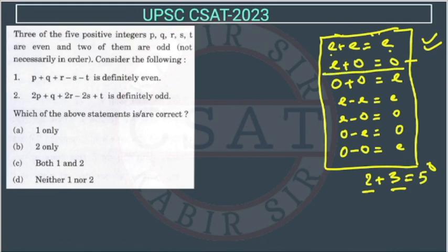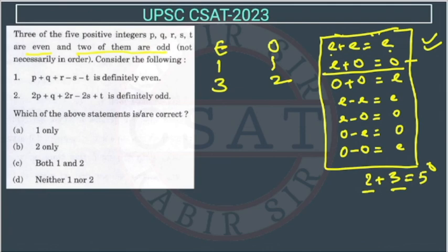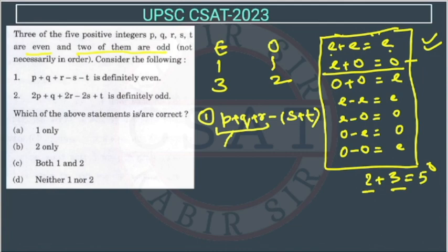They have given p, q, r, s, t as 5 positive integers. Out of these, two of them are odd and three are even. Now consider the first statement: p plus q plus r, which we can write as (p + q + r) minus (s + t).